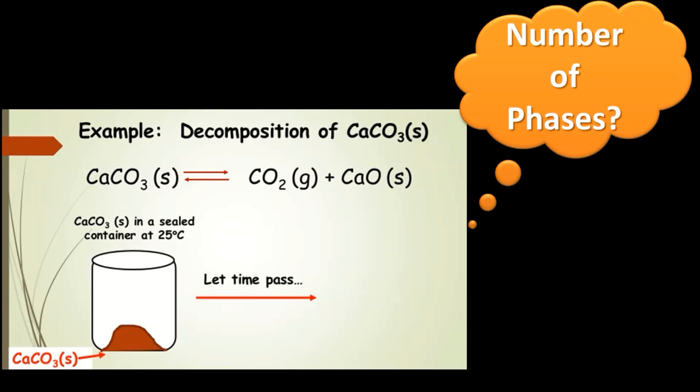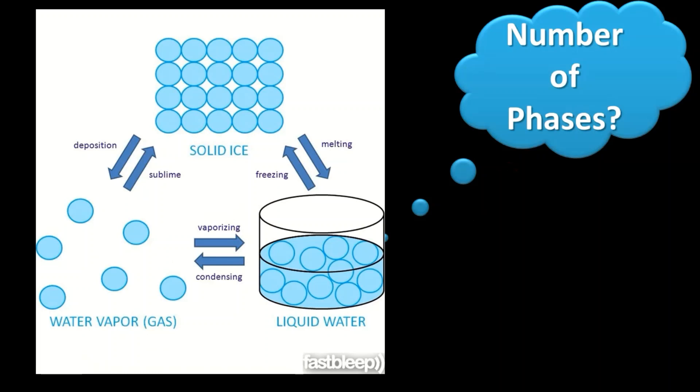For calcium carbonate decomposition: CaCO₃ in solid state decomposes to gaseous CO₂ and solid CaO. Here, three phases are present — CaCO₃ is a solid phase, CaO is a solid phase, and CO₂ is a gaseous phase — so the number of phases is three. For the water system where all three phases are in equilibrium — solid ice, liquid water, and water vapor — the number of phases is again three, as all three are different and well separable.